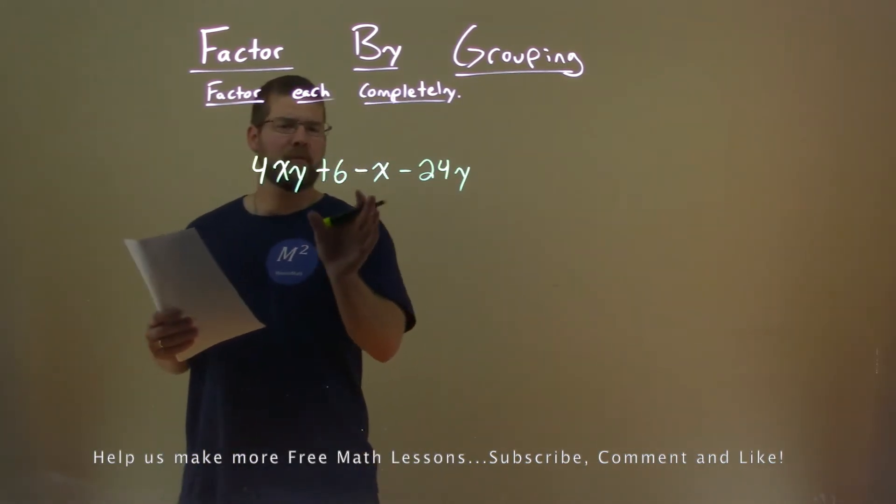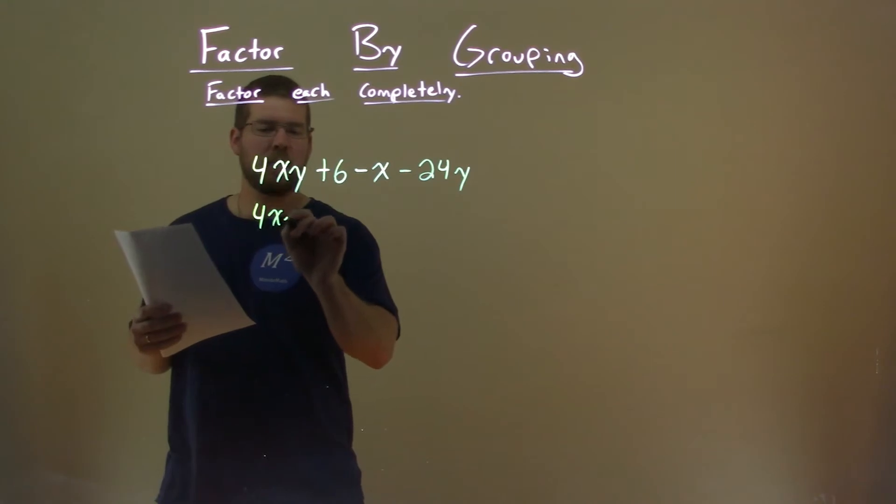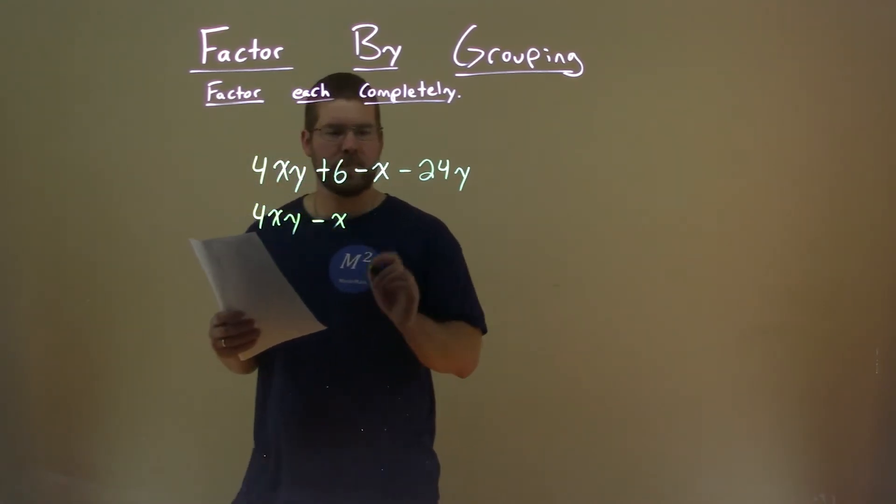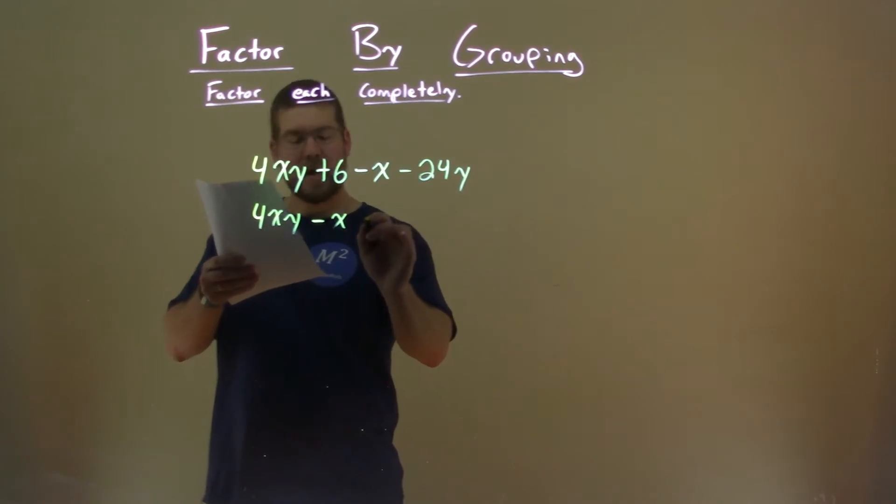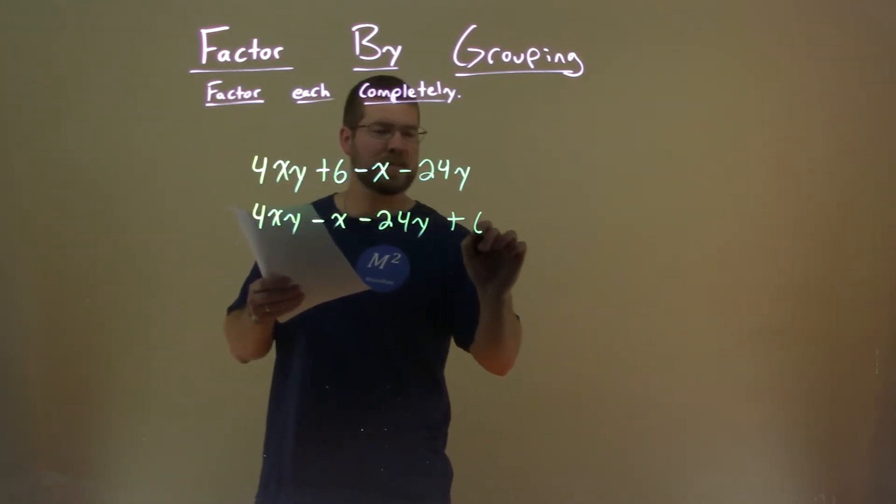Well, the first thing I'm going to do is group my like terms together. I have 4xy here, but then I can put my minus x next to it. I'm then going to put the minus 24y, and then my number 6 at the end.